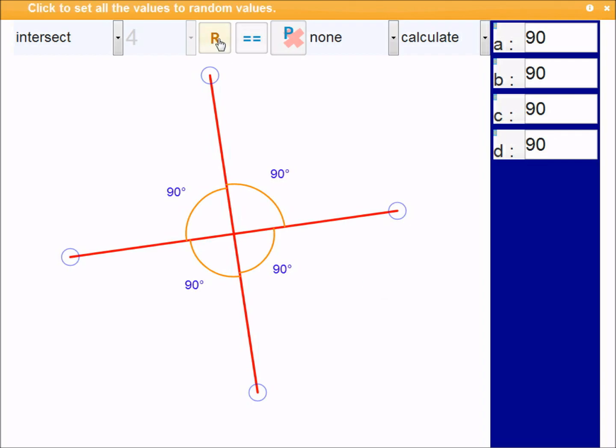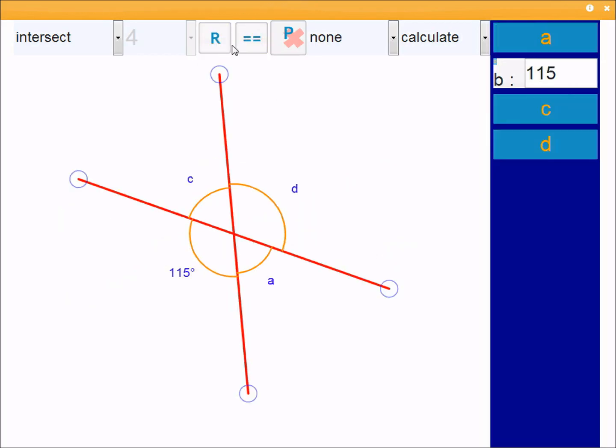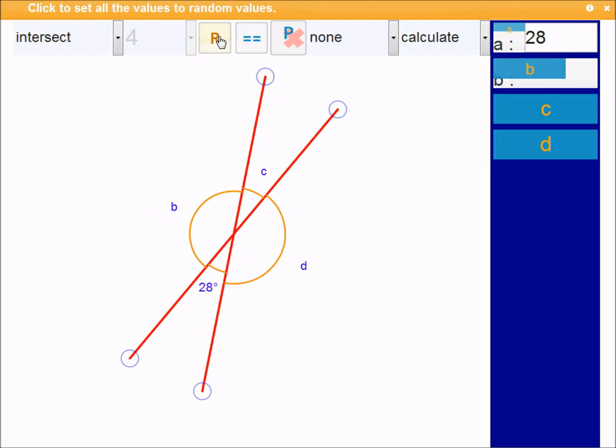Once again, you can create infinite random problems. What's this one here? 150. A is 150. D plus 150, supplementary angle, must add up to 180, so D is 30. If that's 30 there, then B is vertically opposite, must be 30. And we already said A is 150. Great. Another problem. A bit harder, so on.